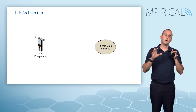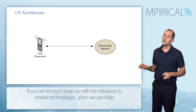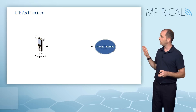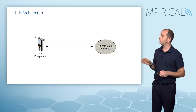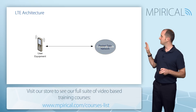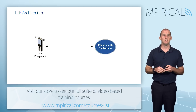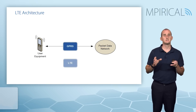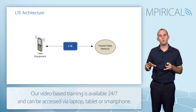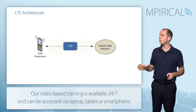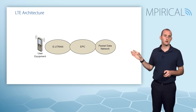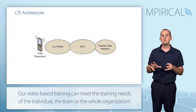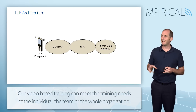Now let's look at the LTE network architecture itself. LTE is designed to provide connectivity between a user equipment and a packet data network — generally the public internet in early deployments, but it could also be a corporate LAN or an IP Multimedia Subsystem for voice over LTE services. There are two high-level areas: the RAN, called the Evolved Universal Terrestrial Radio Access Network (EUTRAN), and the core, the Evolved Packet Core (EPC).